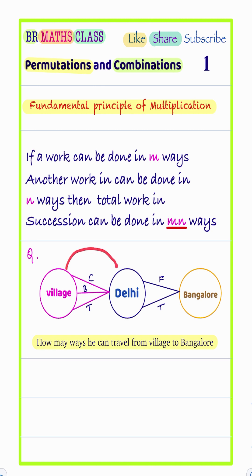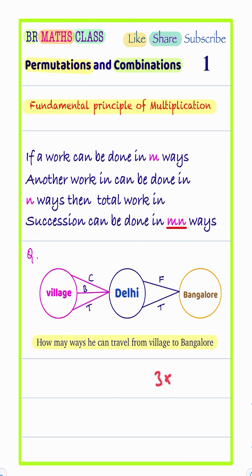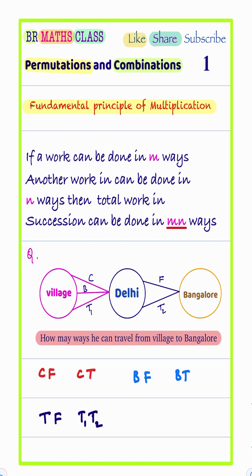As per this, he can travel to Delhi in three ways. Similarly, he can travel from Delhi to Bangalore in two ways. So, by the fundamental principle of multiplication, he can travel from his village to Bangalore in three into two ways — that means six ways. What are those six ways? These are the six ways.